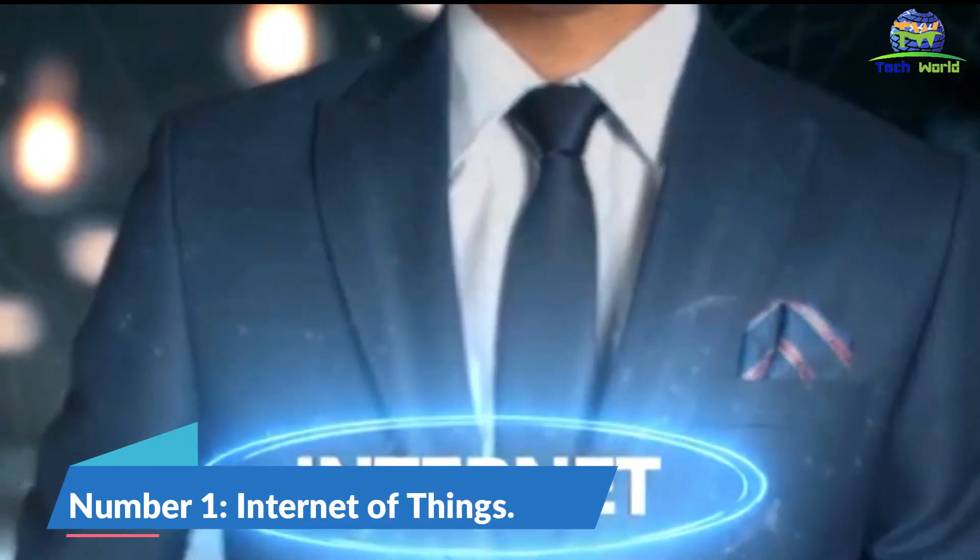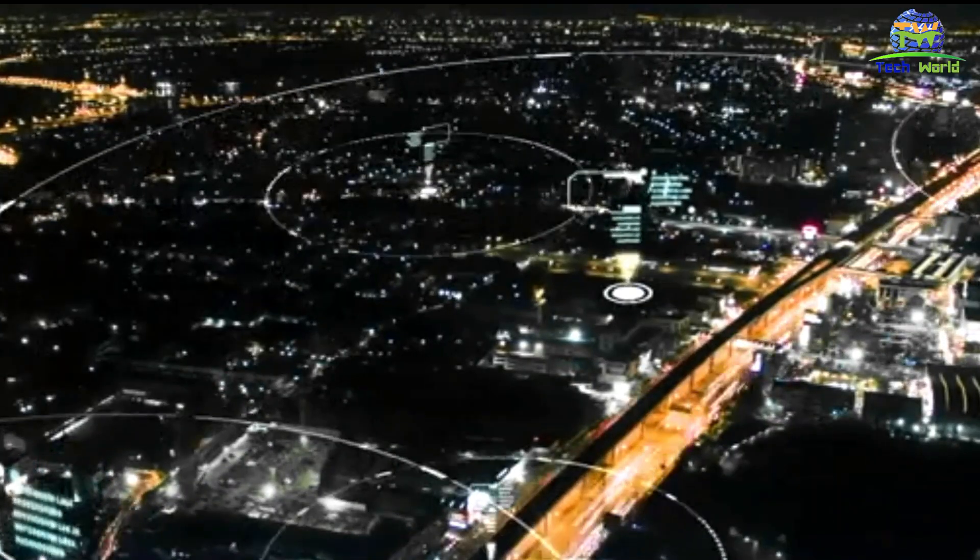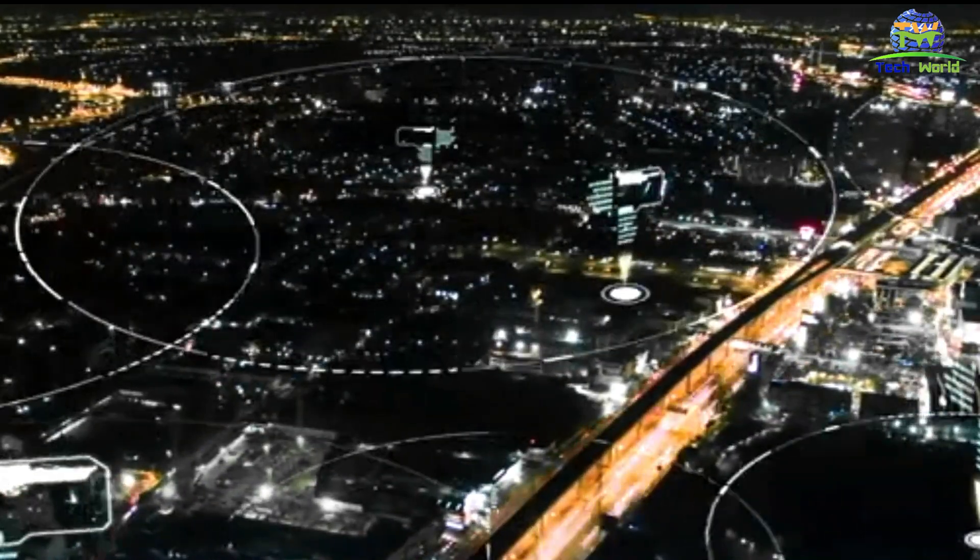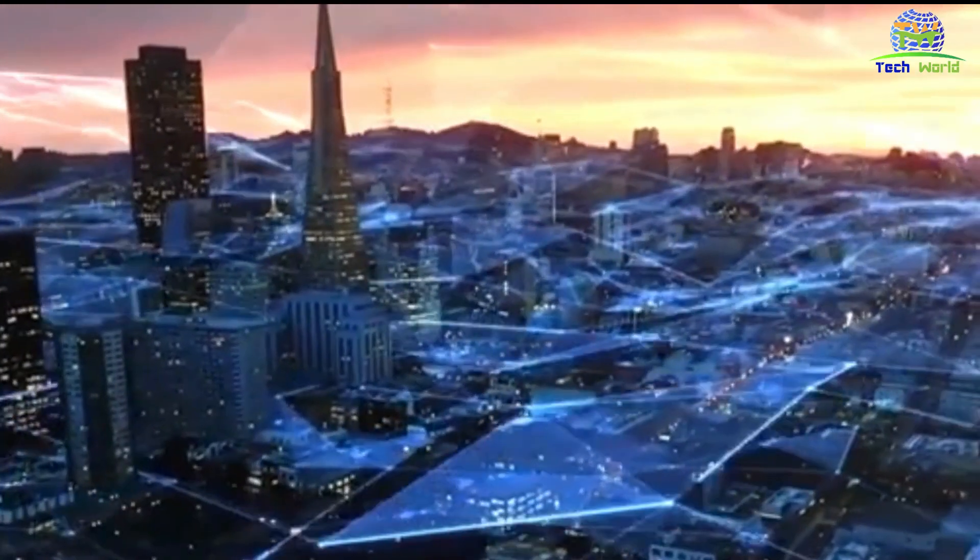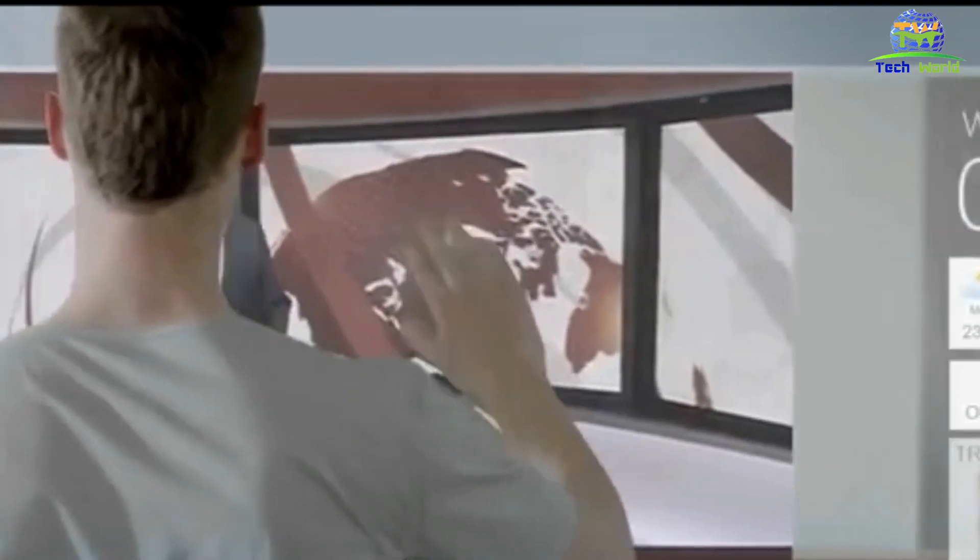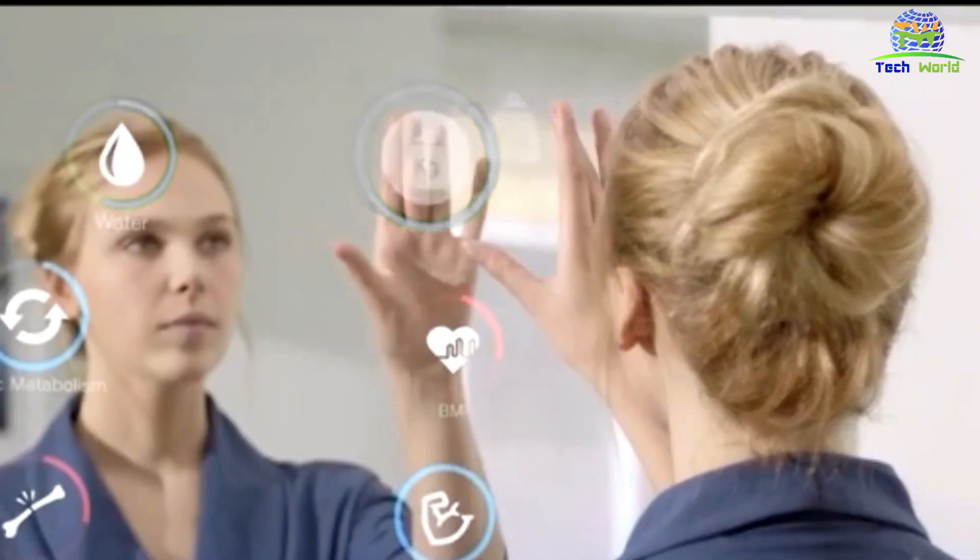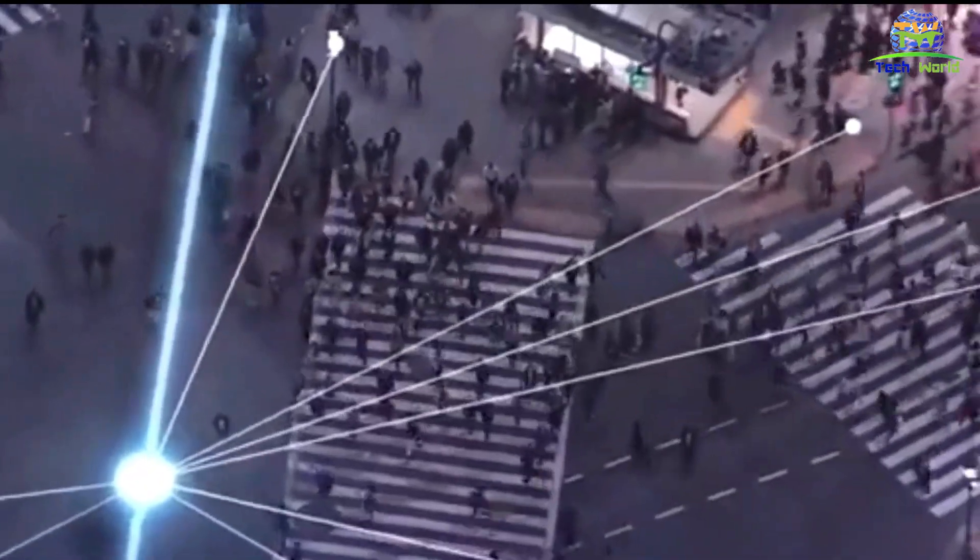Number 1. Internet of Things. The Internet of Things is a network of connected devices that communicate with each other and the internet. This technology has the potential to revolutionize the way we live, work, and interact with the world around us.